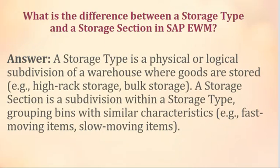What is the difference between a storage type and a storage section in SAP EWM? A storage type is a physical or logical subdivision of a warehouse where goods are stored — for example, high-rack storage or bulk storage. A storage section is a subdivision within a storage type, grouping bins with similar characteristics — for example, fast-moving items or slow-moving items.